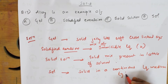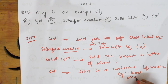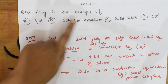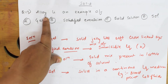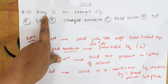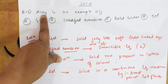Examples of sol are blood, paint, and cell fluids. Now, what they ask us — they said alloy is an example of what. What is an alloy basically? Alloy is a mixture of two or more elements which has metallic properties — a combination of two or more metals. For example, brass is an alloy of copper and zinc, and steel is an alloy of iron and carbon.